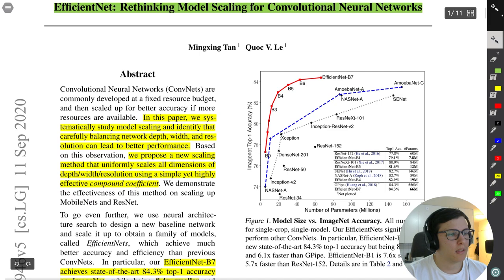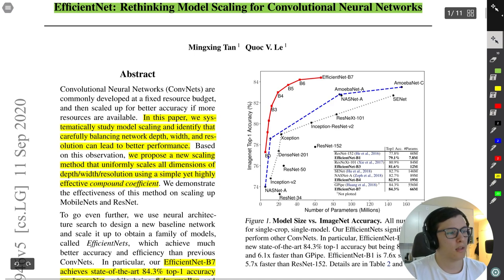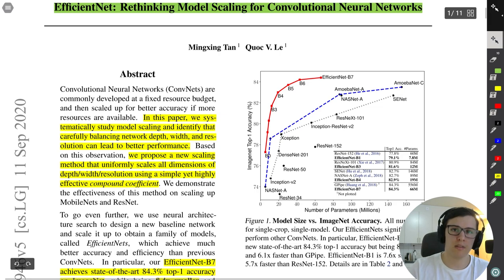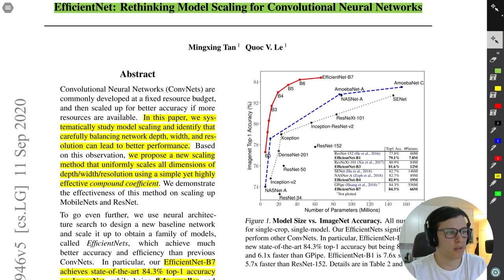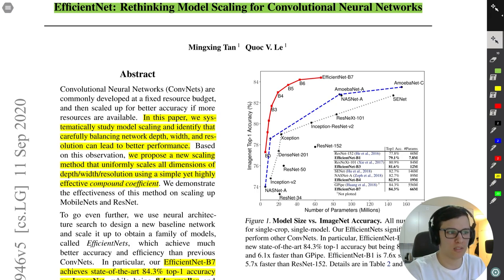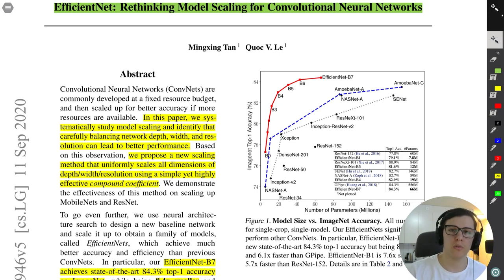In the abstract: we systematically study model scaling and identify that carefully balancing network depth, width, and resolution can lead to better performance. Those three things — the network depth (number of layers), the width (number of channels), and the resolution (input image size) — are the three things they're interested in in this paper.